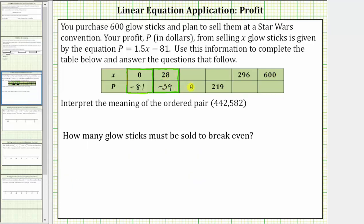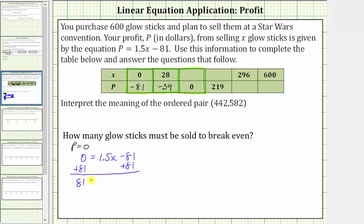The next two columns are different because we're given the value of P and asked to determine the X value. For this next column, we're given the profit is zero. We need to determine the value of X, which is the number of glow sticks sold. So if P equals zero, we substitute zero for P in the profit equation, giving us zero equals 1.5X minus 81. To solve for X, we first isolate the X term by adding 81 to both sides of the equation, giving us 81 equals 1.5X. Then we divide both sides by 1.5.